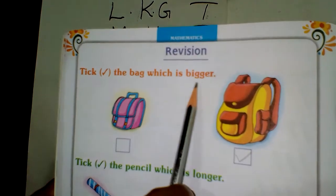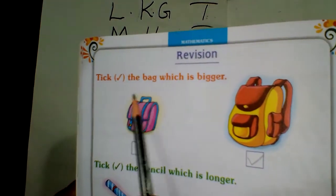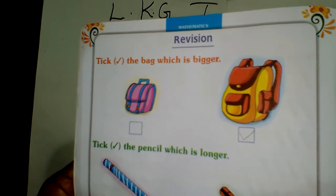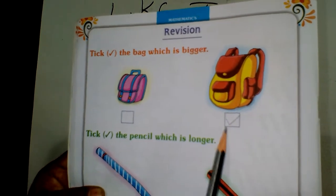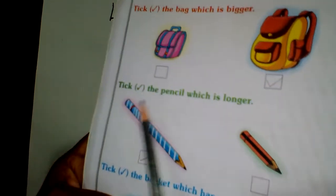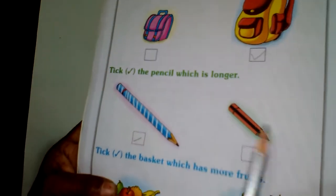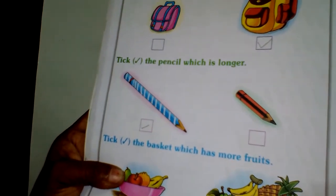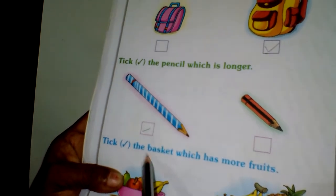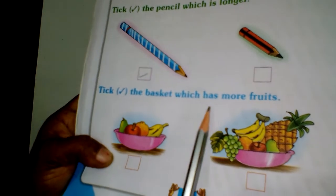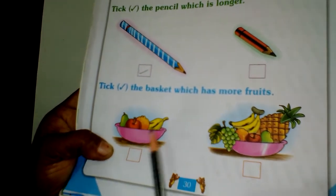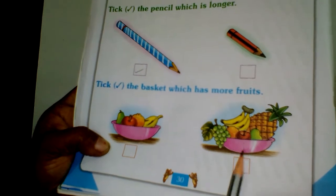Tick the bag which is bigger. Take the big bag. Next one, take the pencil which is longer. Take the basket which has more fruits.